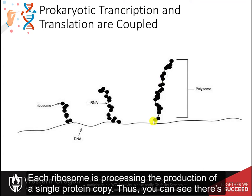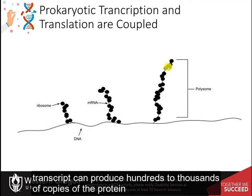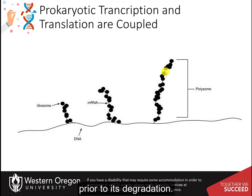Each ribosome is processing the production of a single protein copy. Thus, there is an amplification process that occurs between transcription and translation, as a single messenger RNA transcript can produce hundreds to thousands of copies of the protein prior to its degradation.